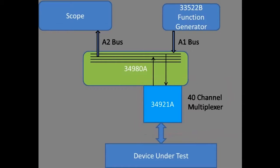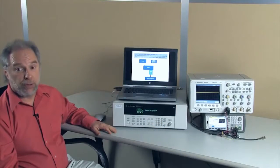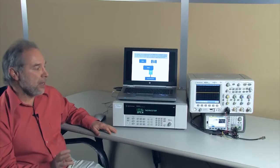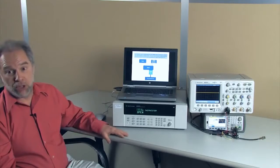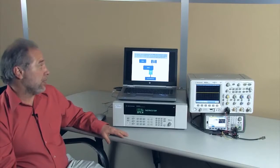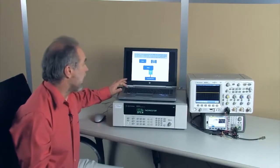In this demo today, I'm going to show how I can inject a function generator signal into the A1 bus, route that signal into the 34980, and have the signal come out of the 34921 multiplexer card and go over to the oscilloscope. This is a very powerful feature to allow you to use one stimulus, like the function generator, and have it fan out to multiple places on the device you want to test.